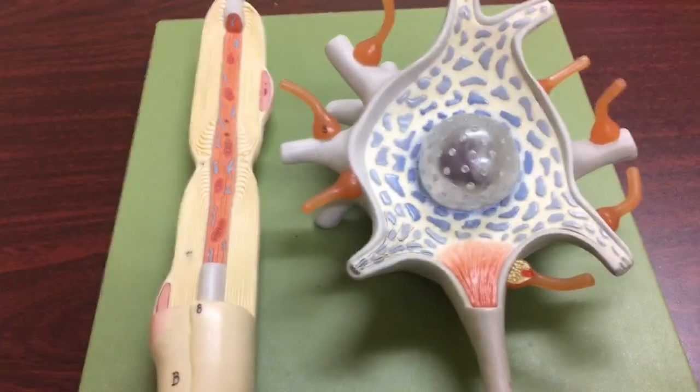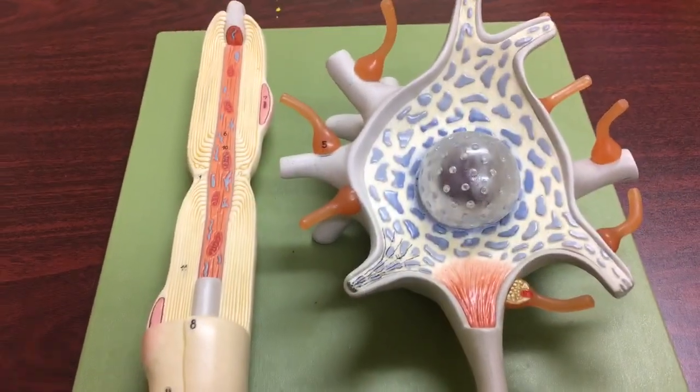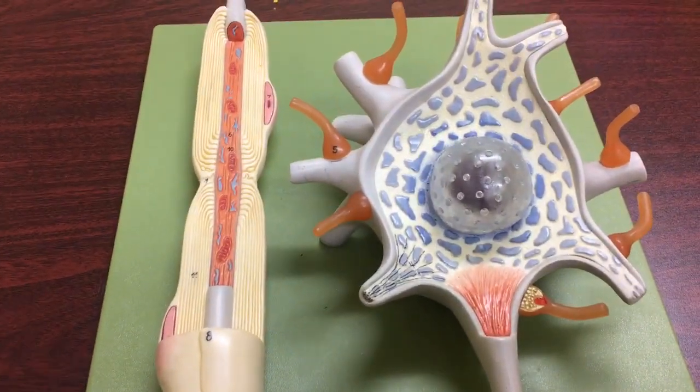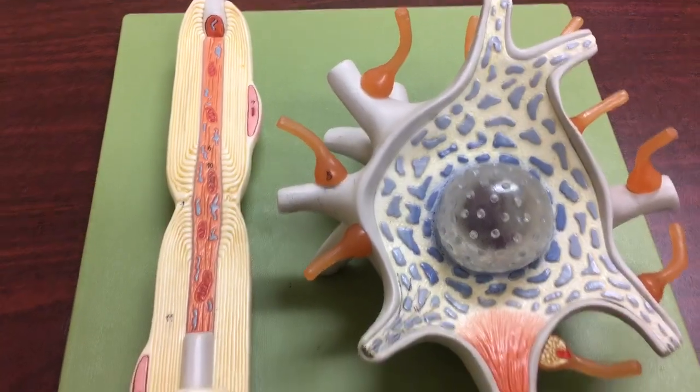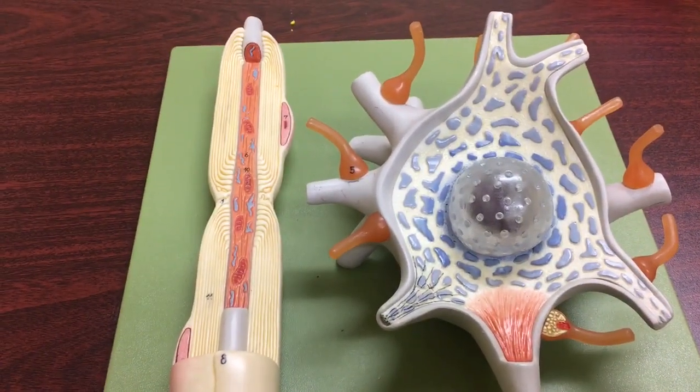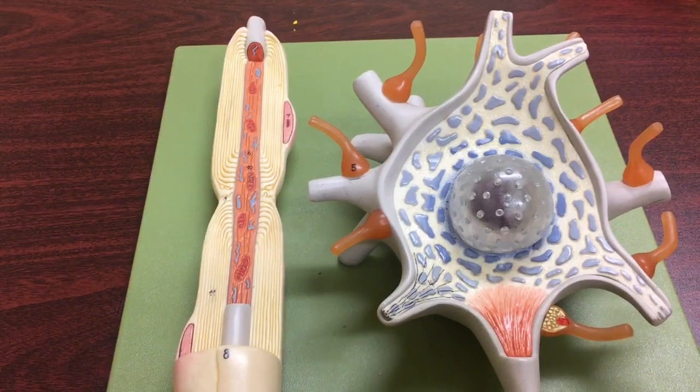In this video we're going to go over this model of a motor neuron. So functionally this neuron is called a motor neuron and structurally it is called multipolar, and that is because it has multiple extensions.